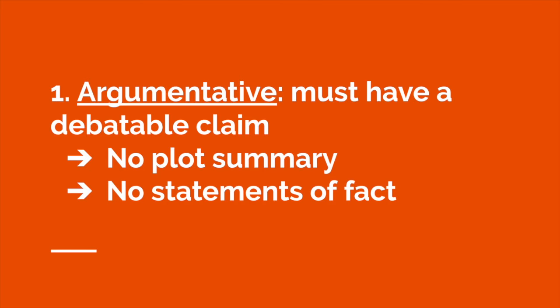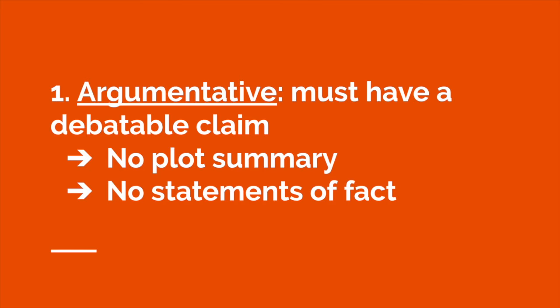So let's start with argumentative. In order for a controlling idea to be argumentative, it must have a debatable claim — something that two reasonable people could take opposing sides on and debate. So that means it cannot be plot summary, and you cannot just state facts. Hopefully this standard should be very easy for you to understand. I think it's easy to identify plot summary versus argumentation.